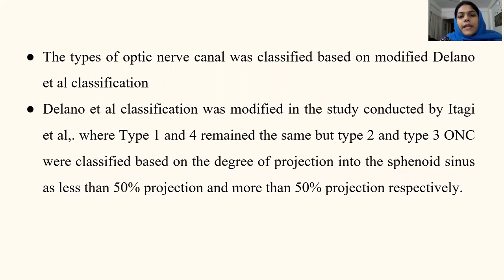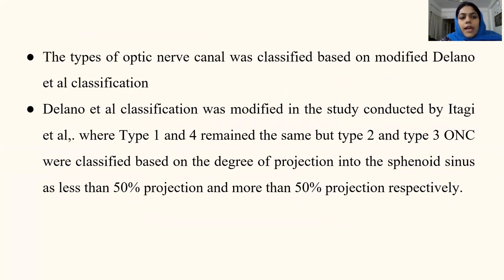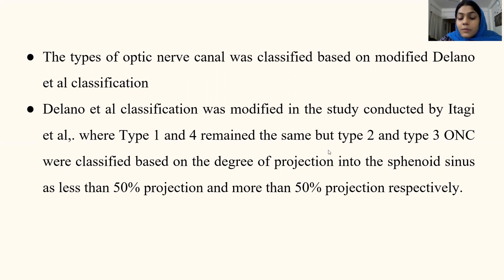The types of optic nerve canal were classified based on the modified Delano et al. classification. This Delano classification was modified in the study conducted by Itagi, where type 1 and type 4 remain the same, but type 2 and type 3 were classified based on the degree of projection into the sphenoid sinus. That is, if it is less than 50% projection, it is designated as type 2, and if it is more than 50%, it is designated as type 3.